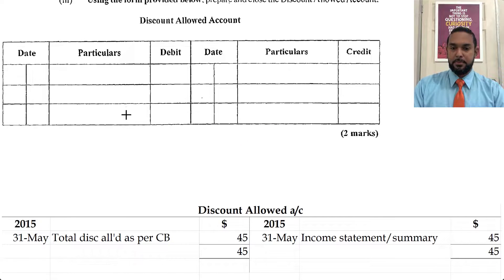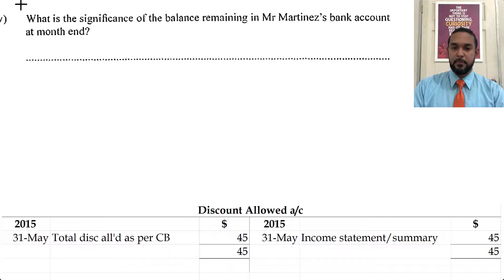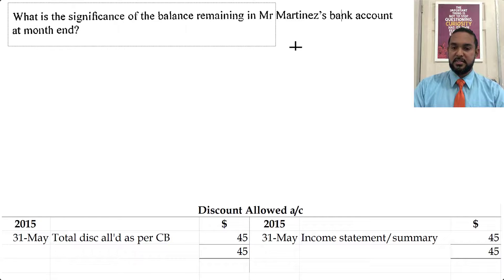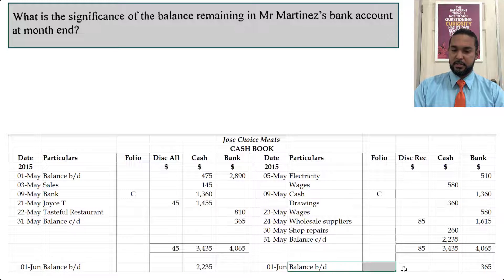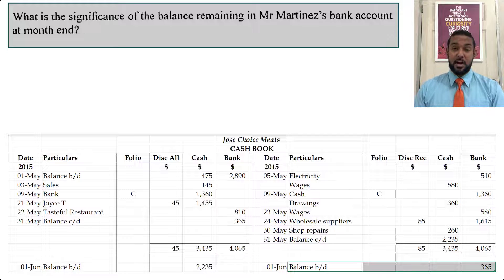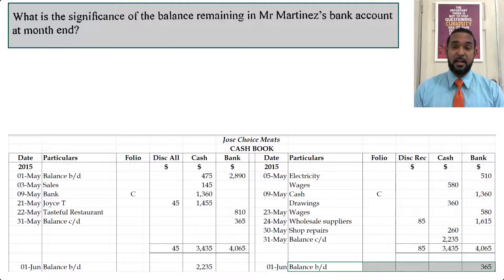Another part of the question asks: what is the significance of the balance remaining in Mr. Martinez's bank account at month end? The balance is on the credit side — it's a bank overdraft, which means he spent more money than he had in the bank. So that is classified as a current liability.